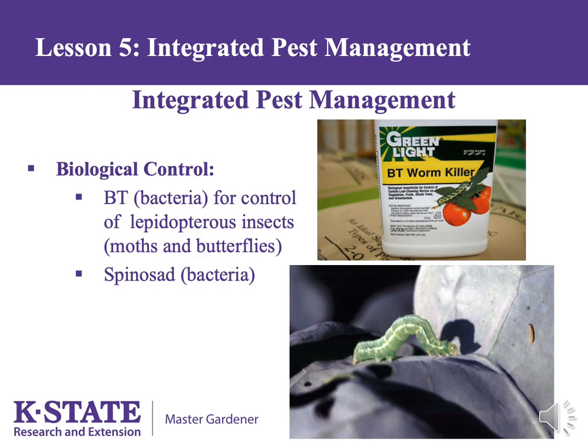The second bacterial pesticide contains the bacteria Saccharopolyspora spinosa — let's just call it spinosad. Spinosad is found in Natural Guard Spinosad, Captain Jack's Dead Bug Brew, and Monterey Garden Insect Spray. Spinosad is also very good on caterpillars of moths and butterflies, like BT, but is much better than BT on certain other insects such as Colorado potato beetle.